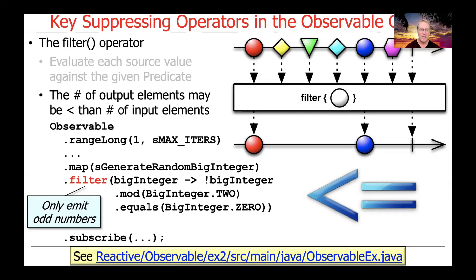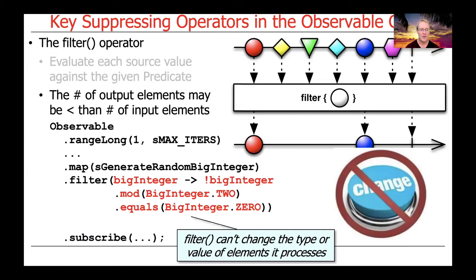The example shown here is from a case study we'll look at at the end of the lesson. What it does is generate a bunch of random big integers, and then it will only emit odd numbers, because there's no point in checking to see if even numbers are going to be prime since they couldn't possibly be prime.